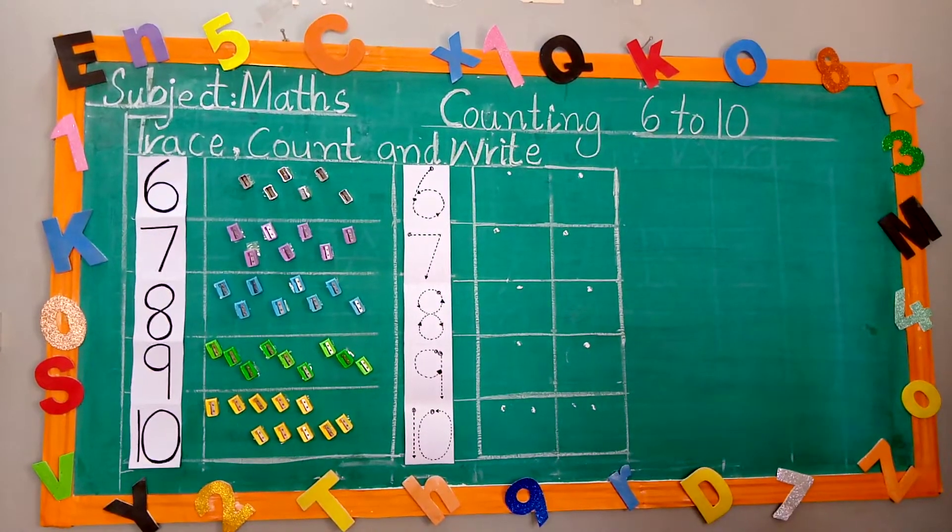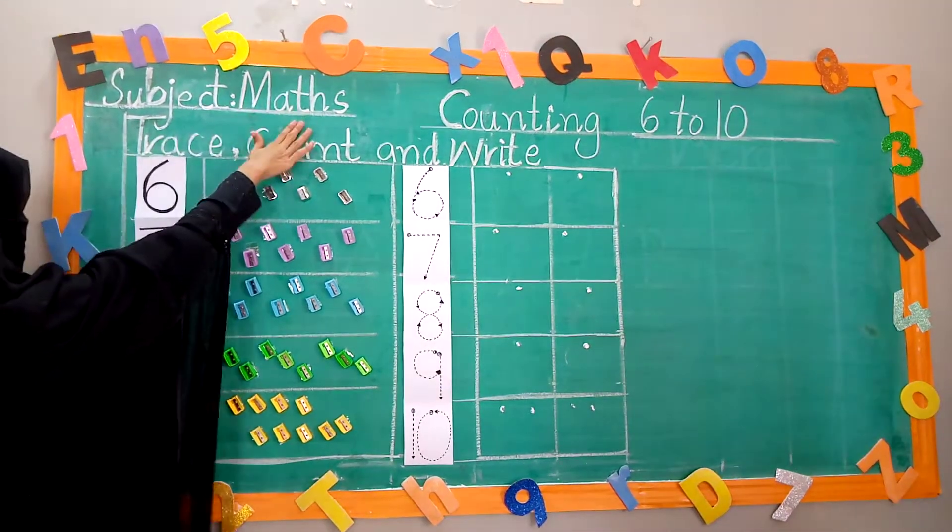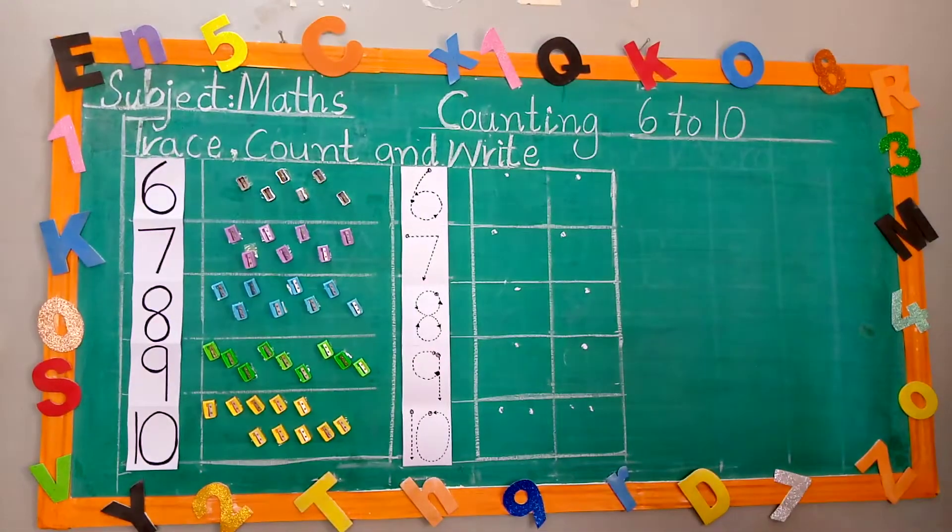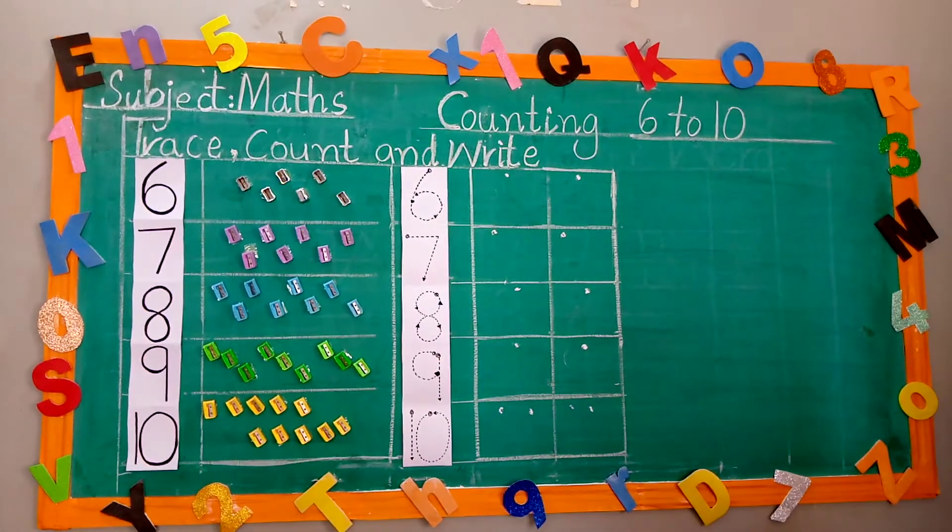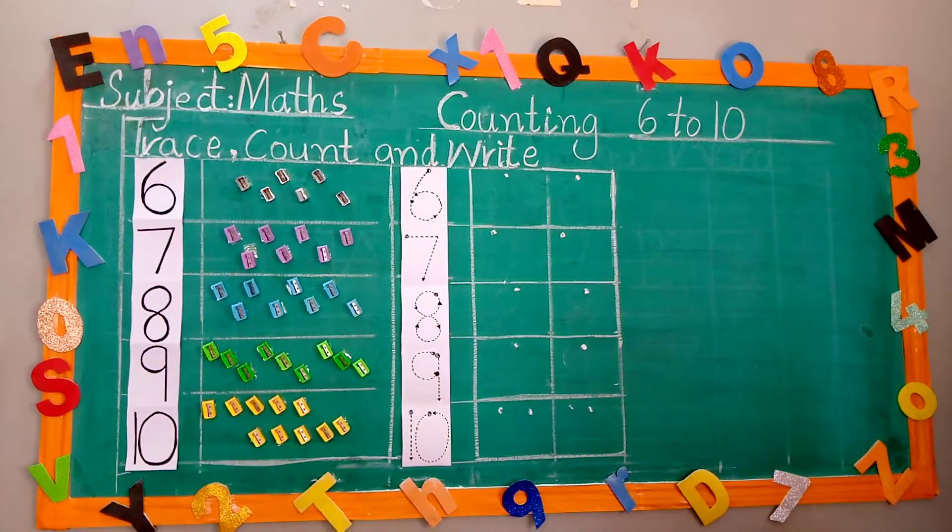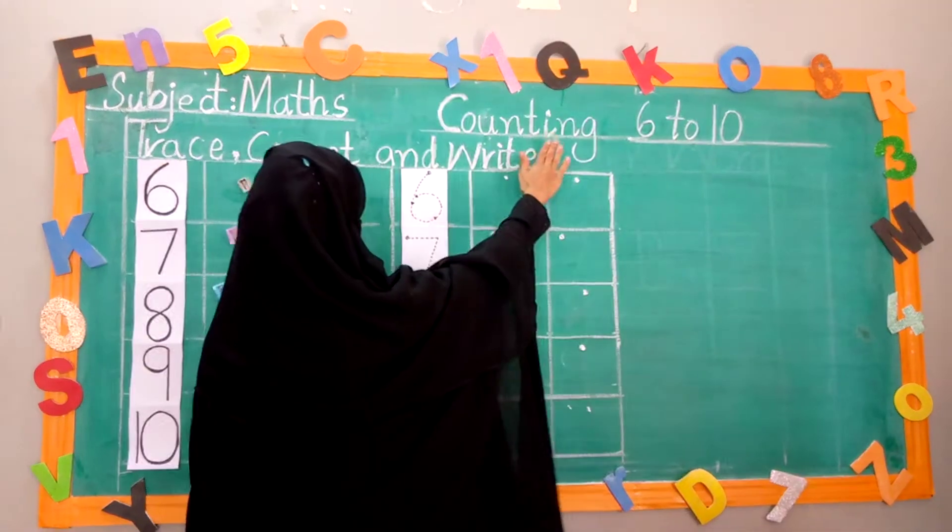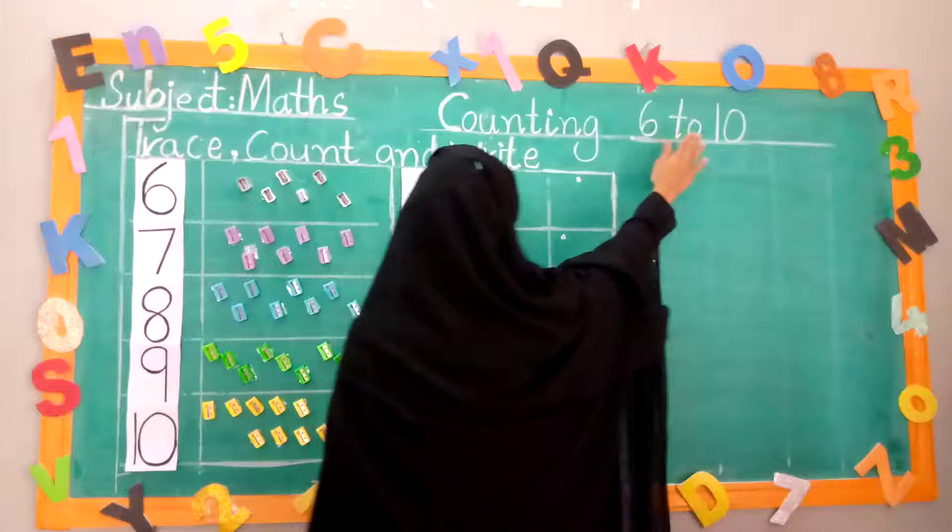As you know that today is our third online class of subject maths, class prep 1. In the previous class of maths, we learnt 1 to 5 counting with formation and tracing. Now, today we are going to do right counting 6 to 10.